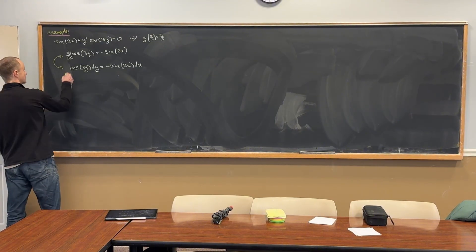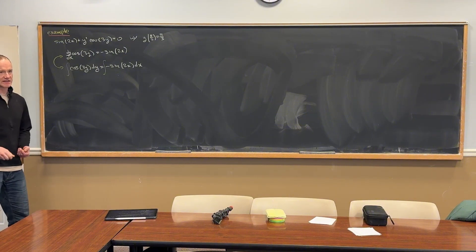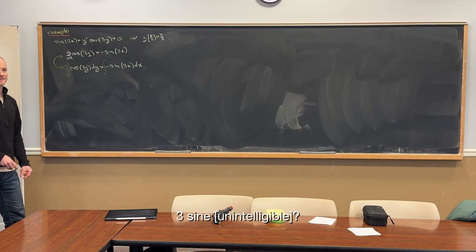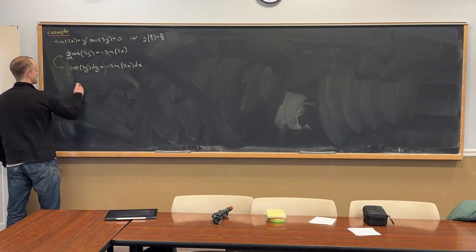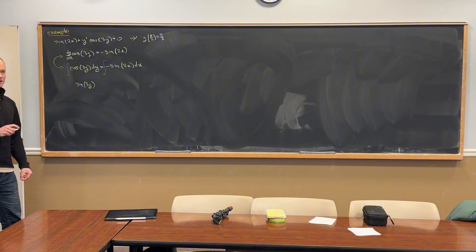So we'll take the antiderivative of both sides. What's the antiderivative of the cosine of 3y? So it's sine of 3y, but not times 3. That would be if we were taking the derivative. It comes out and multiplies, so a third.